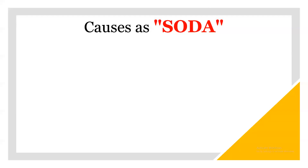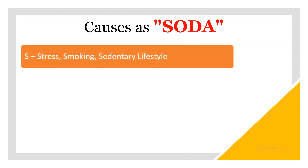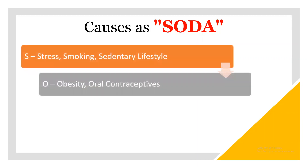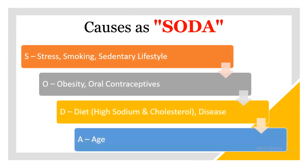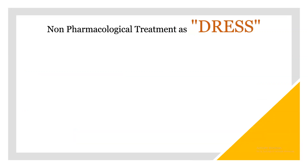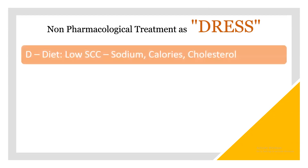The causes of hypertension can be remembered as SODA. S is for stress, smoking, and sedentary lifestyle. O is for obesity and oral contraceptives. D is for diet high in sodium and cholesterol, or any disease that can cause hypertension. A is for age factors.